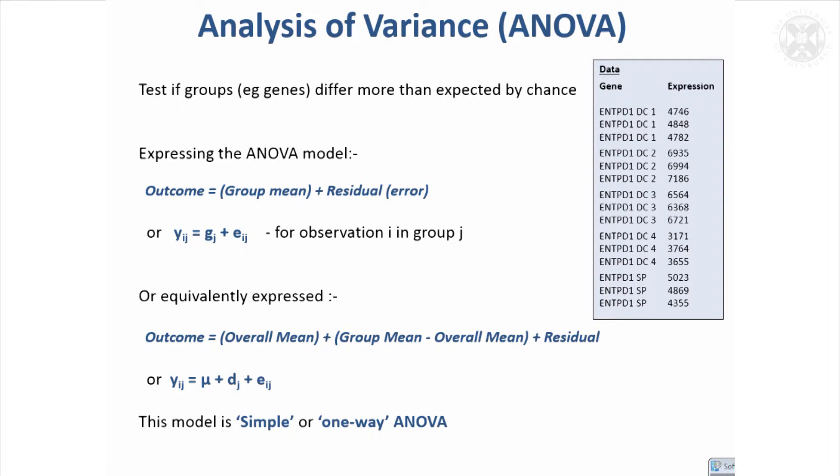Another way of expressing or parameterizing the model is in this form, which is almost the same as what we had before except instead of giving the group mean, it gives an overall mean for the data plus the difference Dj of the group mean from that overall mean. So it's exactly the same except it has this overall mean in the model, and the parameters that come out will be slightly different, but that won't affect the p-value that we get eventually.